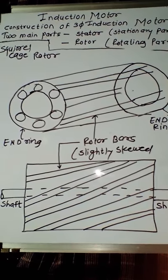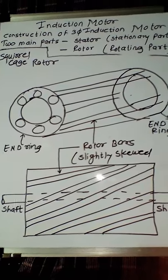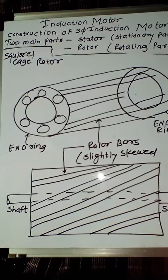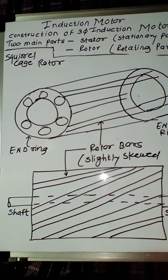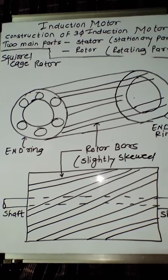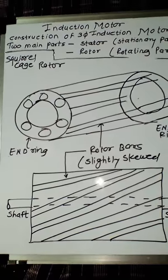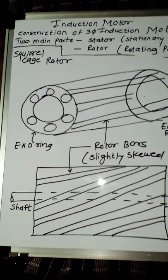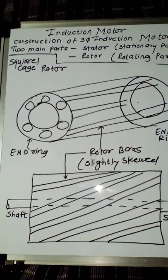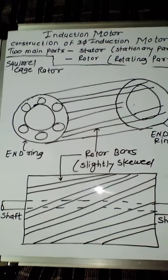Let's discuss the induction motor. As told in the previous lecture, there are two types of rotor construction widely used in the three-phase induction motor: the squirrel cage rotor and the slip ring rotor. Almost 90 percent of induction motors used in industries have a squirrel cage rotor. The motor is called a squirrel cage induction motor because it uses this type of rotor.